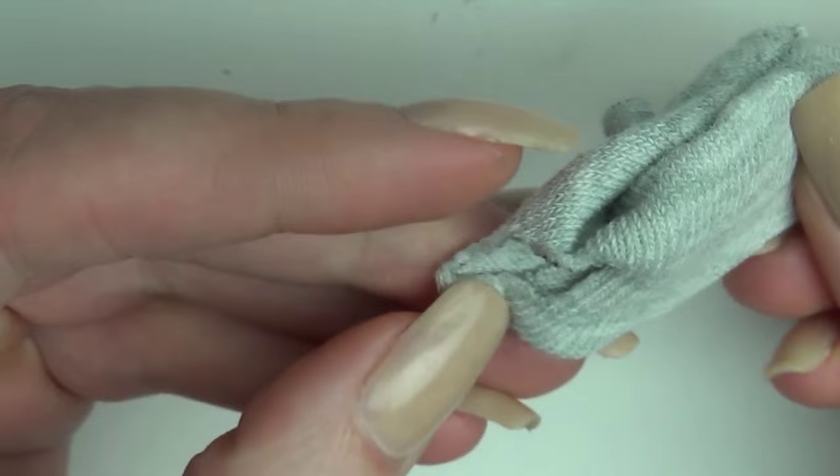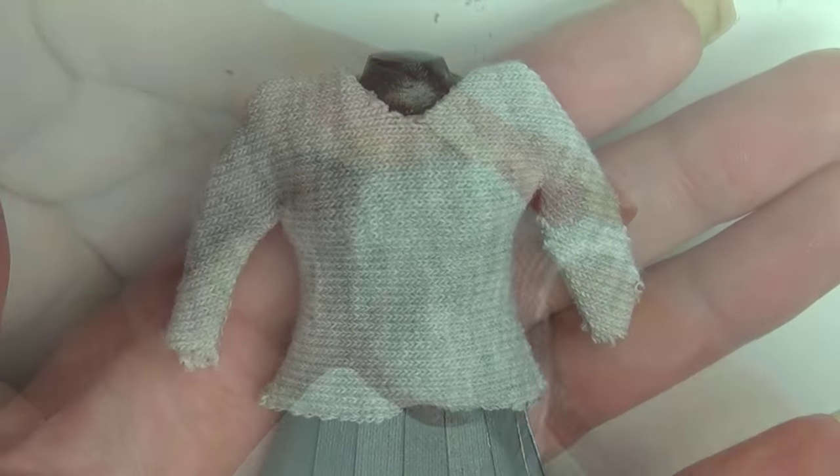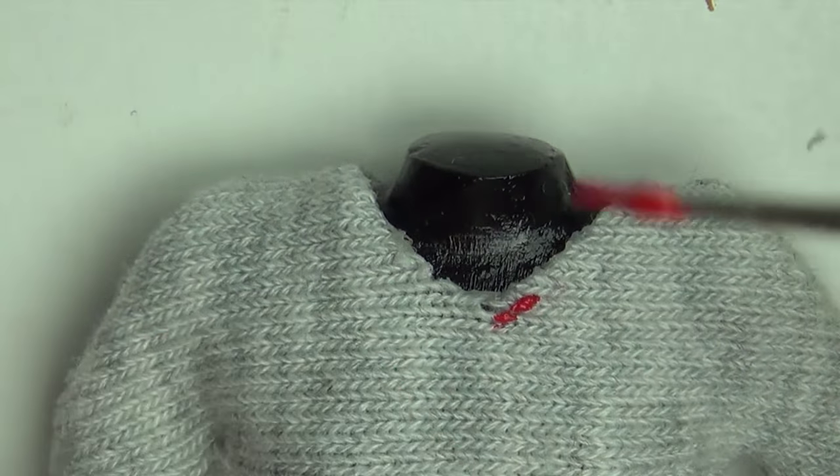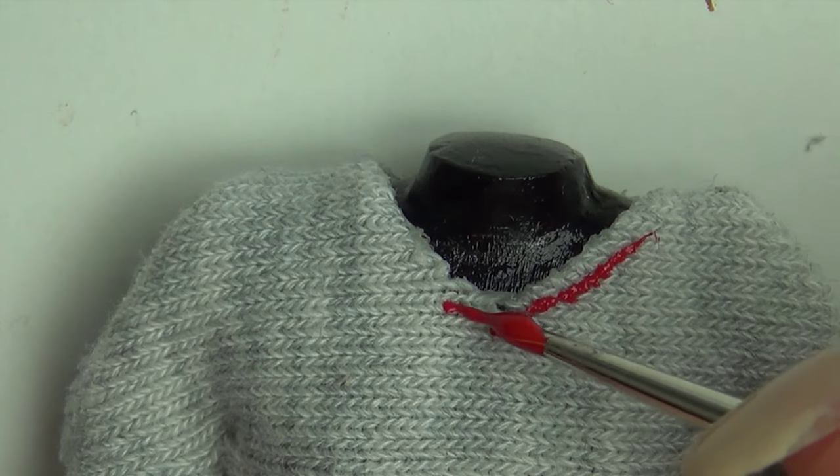Turn it right side out and place it on the doll. Paint on the details on the neckline. I chose the Gryffindor colors.